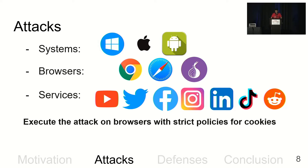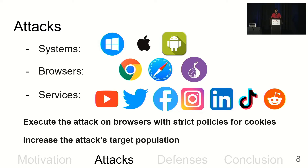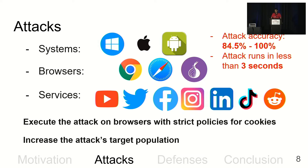We also increased the attack's target population by applying it to highly popular services which have no currently exploited cross-site leaks, including Gmail, Twitter, Facebook, and others. The attack was successful in these settings, with attack accuracy ranging between 84.5% to 100%, taking less than three seconds in most cases, and up to 10 seconds when using Tor Browser.